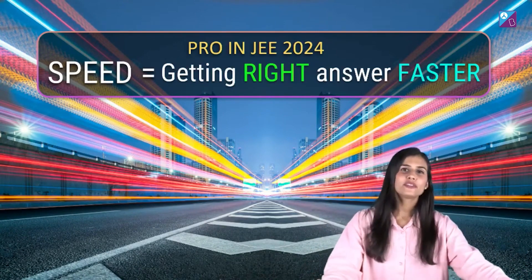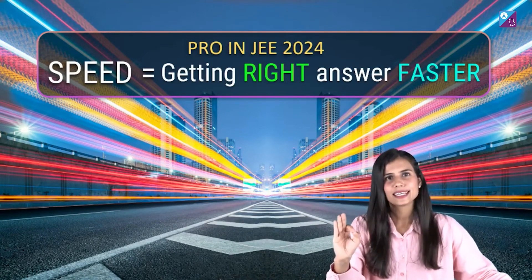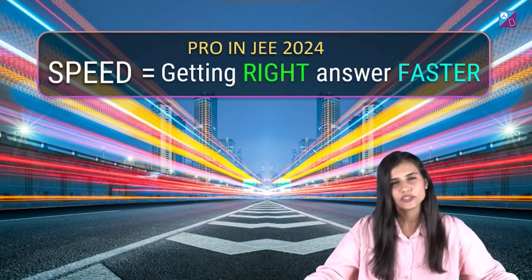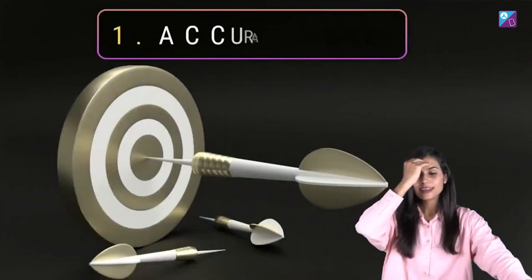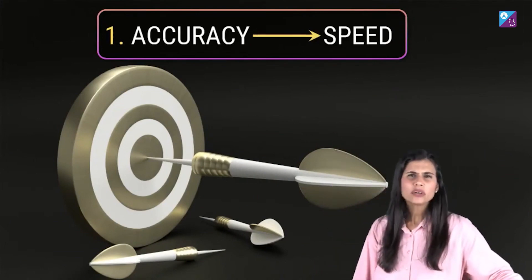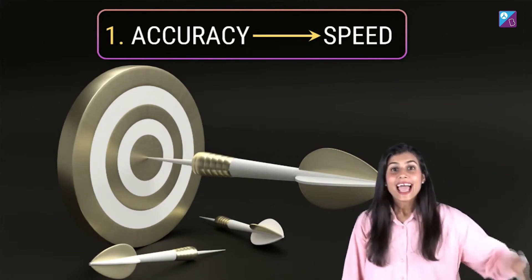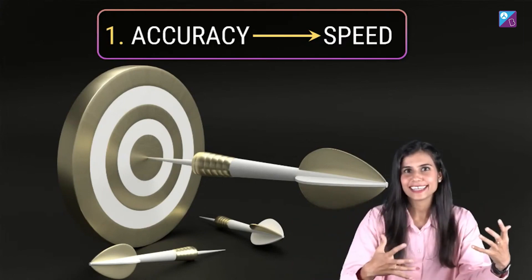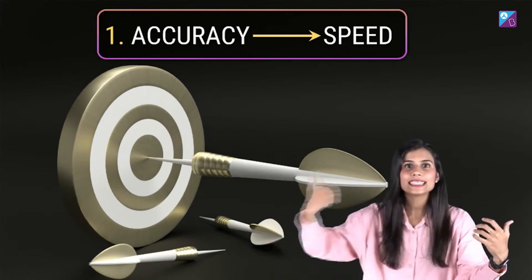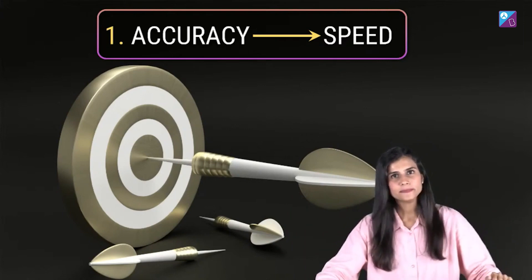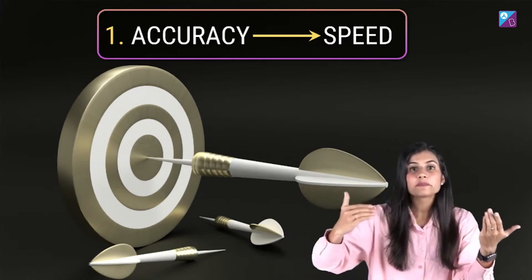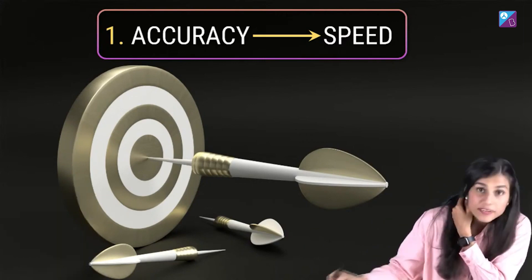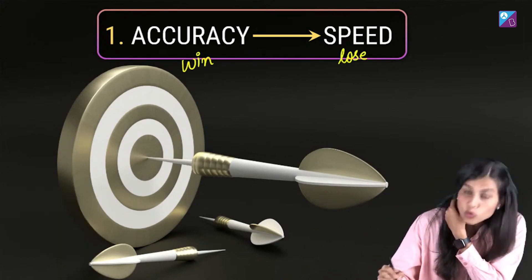Now I am going to share a few tried and tested tricks and tips which, if you apply in your preparation, will definitely show fantastic improvement in your speed. The very first tip: accuracy is what leads to speed. You have to let accuracy win and speed lose in the beginning. Ma'i ne kaha — you have to let accuracy win and speed lose at the start. Yeh wohi baat hai ki hum bade fayde ke liye chota nuksaan jheelne ki baat kar rahe hain.